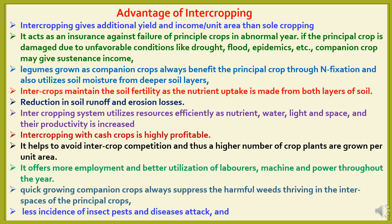Intercropping gives additional yield and income per unit area compared to sole cropping. It acts as insurance against failure of principal crops in abnormal years — if the principal crop is damaged due to unfavorable conditions like drought, flood, or epidemics, the companion crop may give sustenance income. Legume crops as companion crops elevate benefit to the principal crop through nitrogen fixation and also utilize soil moisture from deeper soil layers. Intercrops maintain soil fertility as nutrient uptake is made from both layers of soil, and there will be reduction in soil runoff and erosion losses. Intercropping systems utilize resources such as nutrients, water, light, and space efficiently, and productivity is increased.